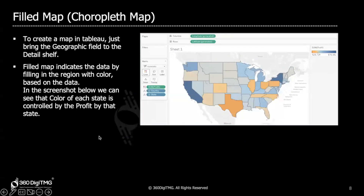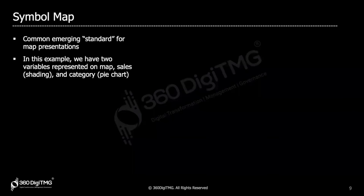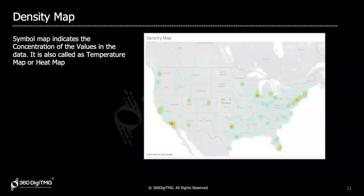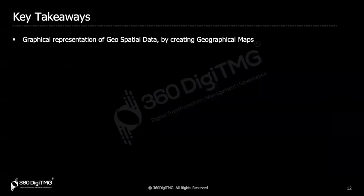When will we go for geographical maps? When you have geographical data — as simple as that. The types of maps we can create include fill map, symbol map, and density map, which we have covered, though there are many other map types possible in Tableau. We have understood that when you have geospatial or geographical data, it is always good to represent it on a geographical map. Hope the video was informative. Please do practice and I will see you in the next video — thank you so much, bye.